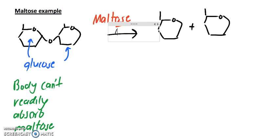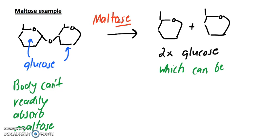So maltase is going to cleave the bond here and give us two glucose, give us two glucose which we can readily absorb.